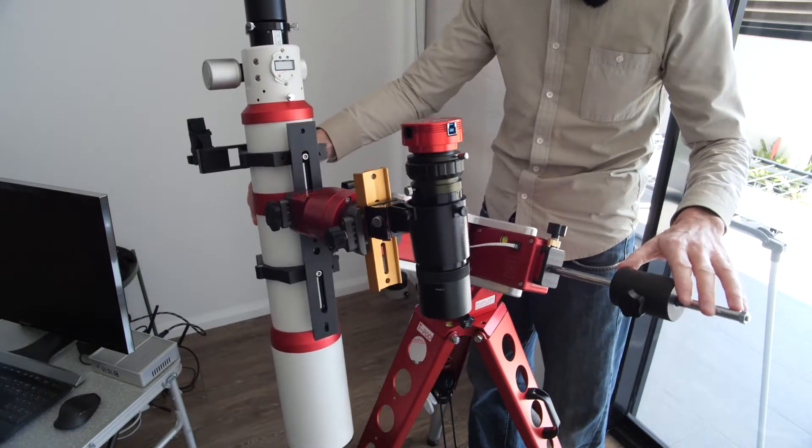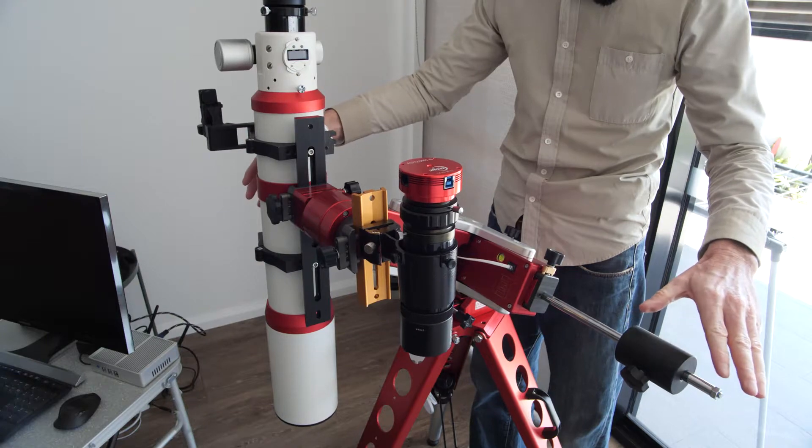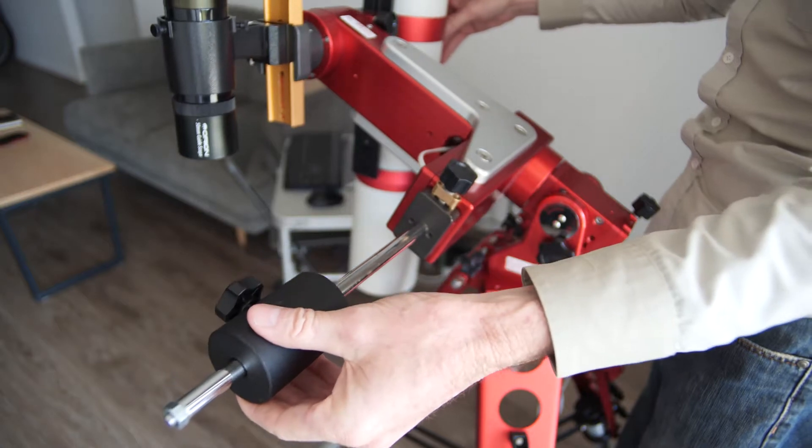Balancing the scope on the RA axis, I rotate the telescope so it's pointing up and down and move the counterweight on the RA axis until balance is achieved.